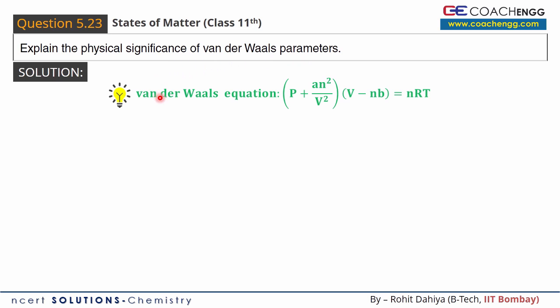So first I will discuss the van der Waals equation, which states pressure of the real gas plus a n squared by v squared, where n stands for number of moles, v is the volume of container, and a is one of the van der Waals parameters. This whole term is multiplied by v minus nb, where again v is the volume of the container, n is the number of moles, and b is another van der Waals parameter. This is equal to nRT: number of moles, universal gas constant, and temperature of the gas in Kelvin.